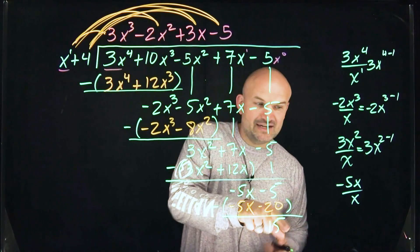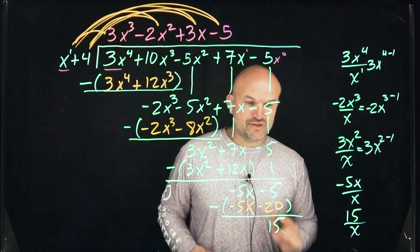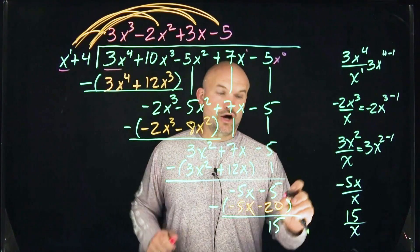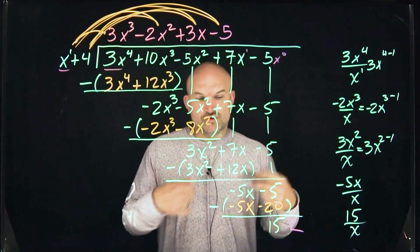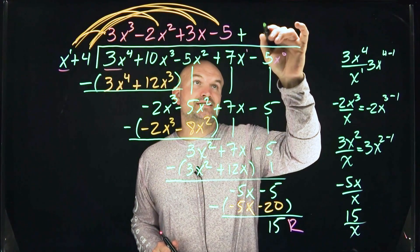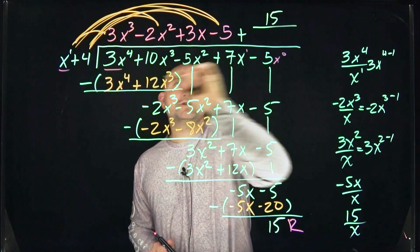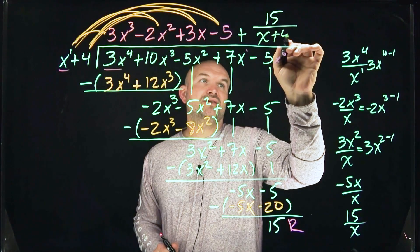x does not evenly divide into 15. 15 cannot be divided by x. So therefore, this is what we're going to call our remainder. Now to write your quotient when you have a remainder is you're simply going to add it and you're going to take the remainder, 15, and put it over your divisor, x plus 4.